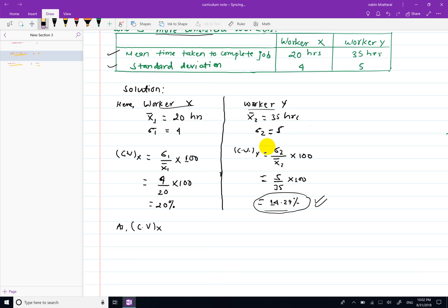Coefficient of variation for X is 20%, which is greater than coefficient of variation for Y at 14.29%. So Worker Y is more consistent.